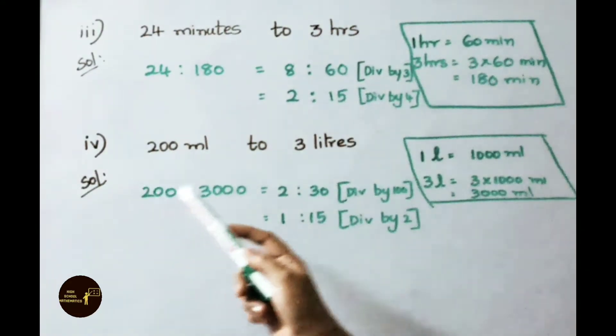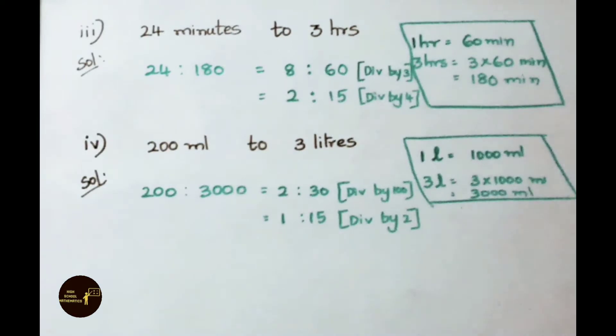See the fourth sum now 200 ml to 3 liters. Here also both are not in same units. So let us convert them to same units. We know 1 liter equals to 1000 ml. 3 liters means 3 into 1000 that is 3000 ml. So the ratio is 200 is to 3000 ml.